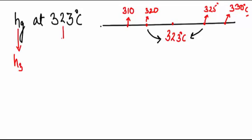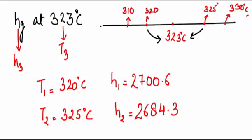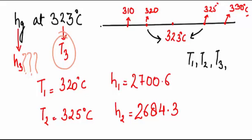Your hg becomes h3 and the given temperature is t3. T1 is equal to 320, T2 is equal to 325. The value of hg in front of 320 is your h1 which is equal to 2700.6, and similarly the value of hg written in front of 325 degrees Celsius is your h2 which is equal to 2684.3, and we have to find the value of h3 when T1, T2, T3, h1, and h2 are given.